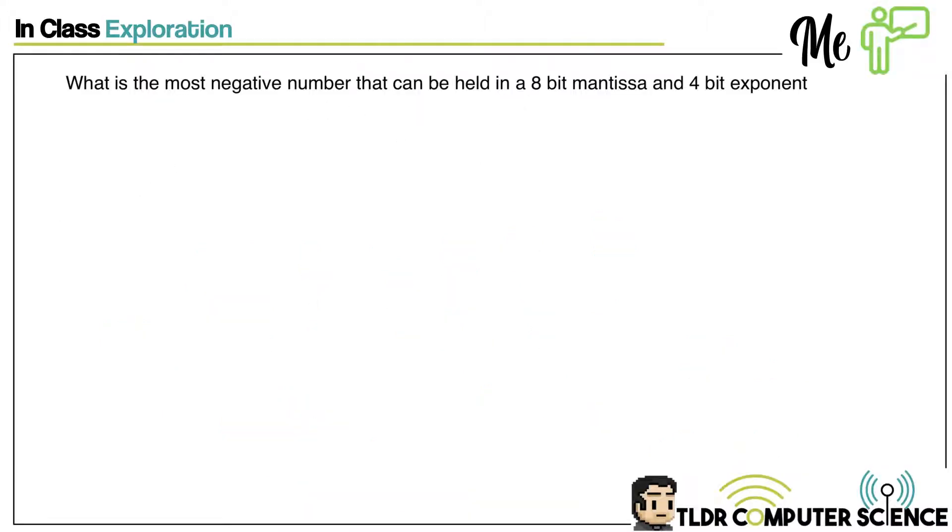Okay guys, we've got this question here. What is the most negative number that can be held in an 8-bit mantissa and a 4-bit exponent? So most negative, largest negative number. For the mantissa bit, you're going to want to go 1 to make it negative because it starts with a negative. 0, 0, 0, 0, 0, 0, 0.